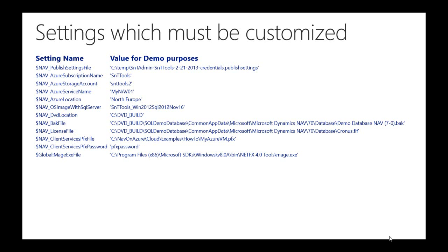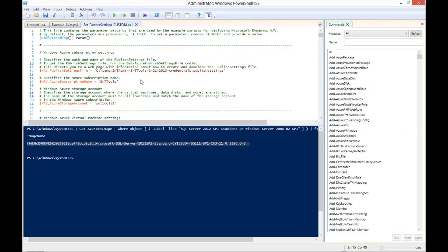The next setting is NAV client services pfx password. This setting should contain the password for the pfx file you specified for the NAV client services pfx file setting above. If you are using the sample pfx file, the values should be the same as shown on the current slide. The next setting is $global:MAJexeFile. This setting should contain the full path to the MAJ exe file associated with the manifest generation and editing tool you would have installed on your PC earlier. See step 2 in my previous video, How Do I Get Started with Provisioning Tools for Azure, for more details. When you have configured all your settings appropriately, save the SetPartnerSettings-Custom.ps1 file.